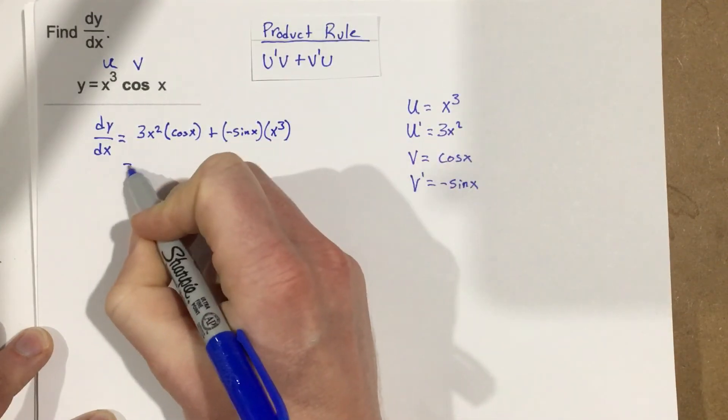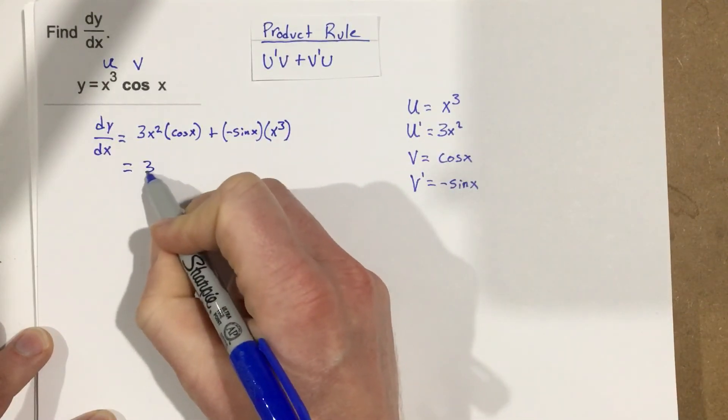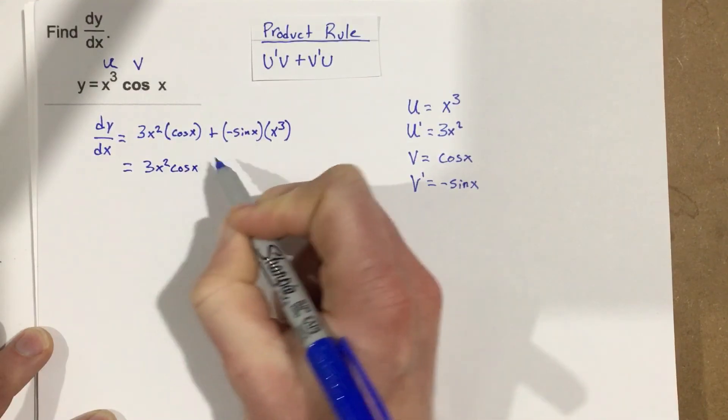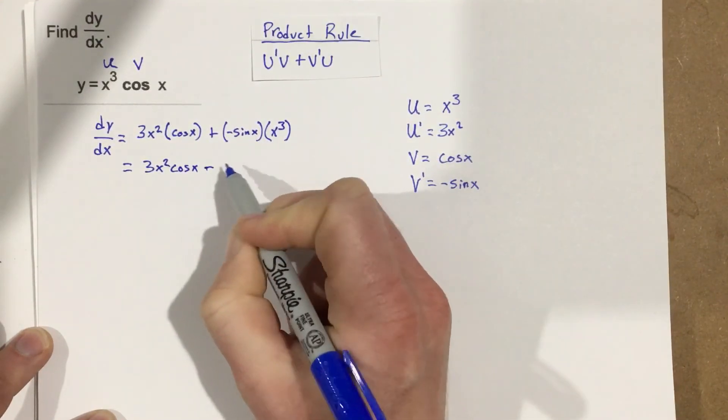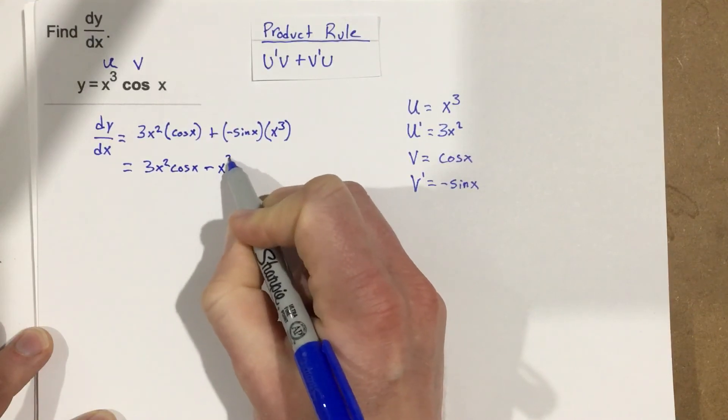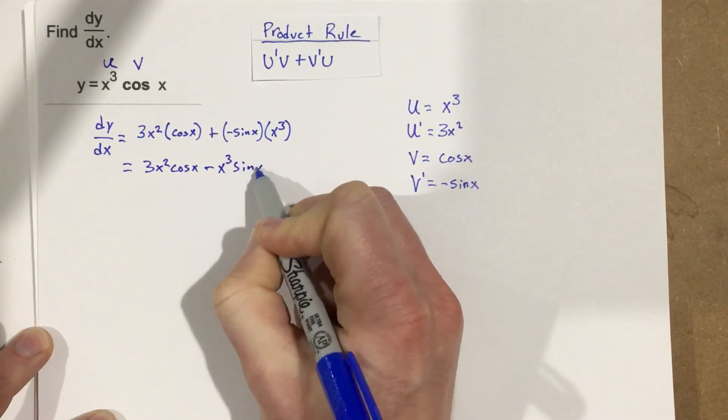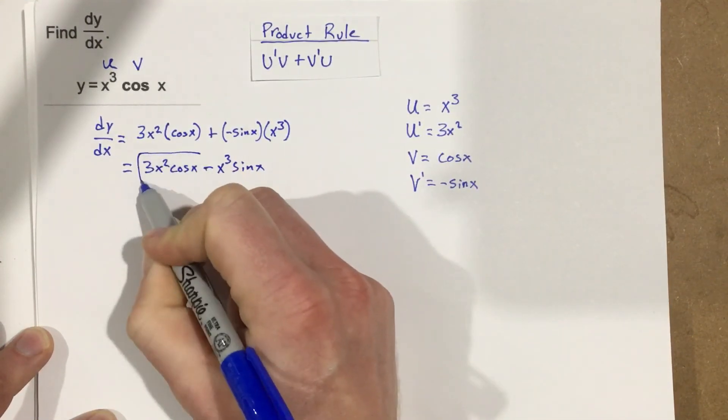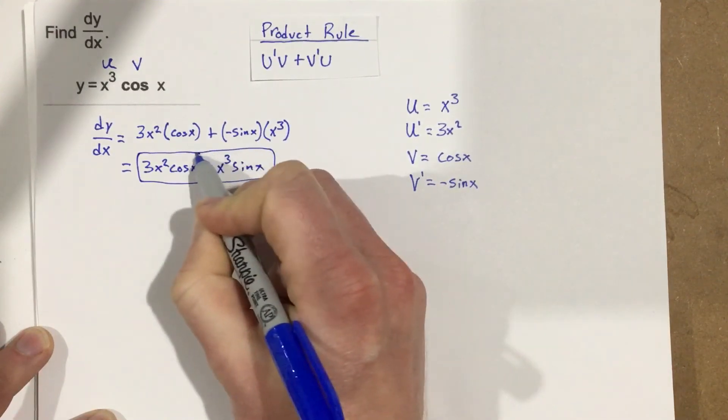So I end up with, this will be 3x squared cosine x minus x cubed sine x. And this is the derivative for our original equation.